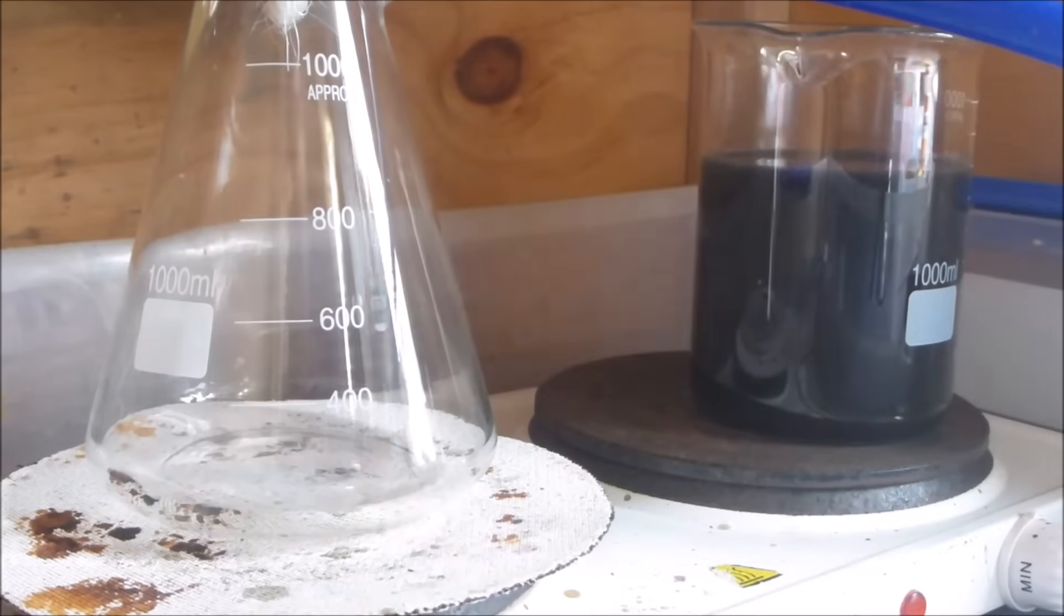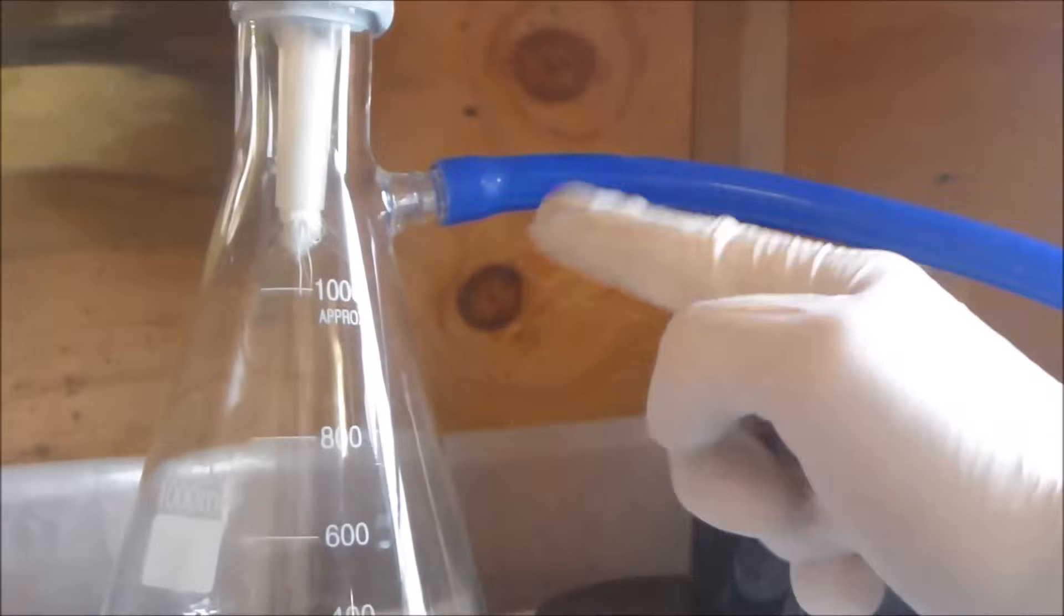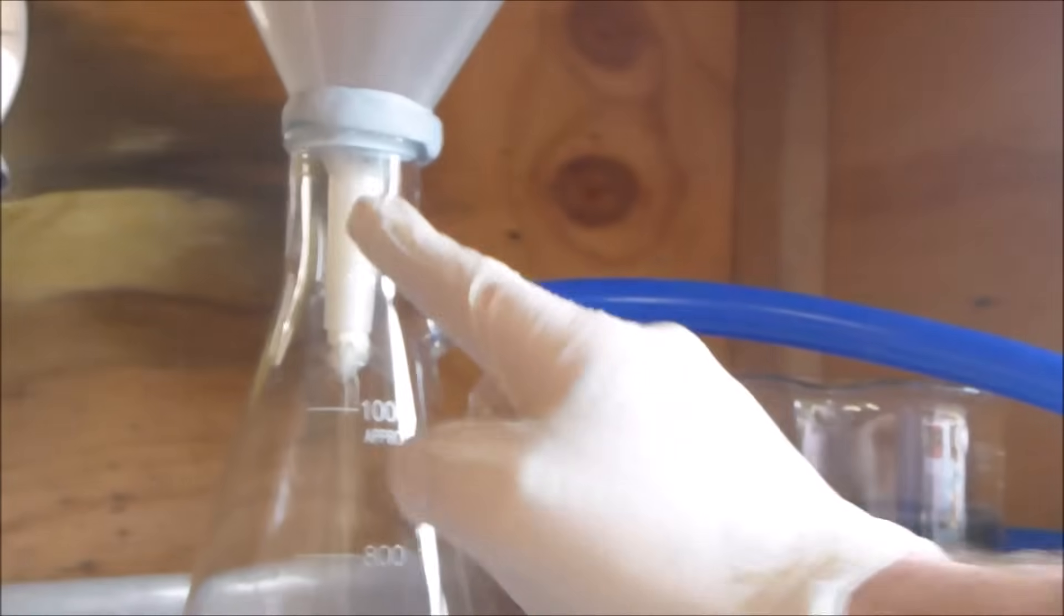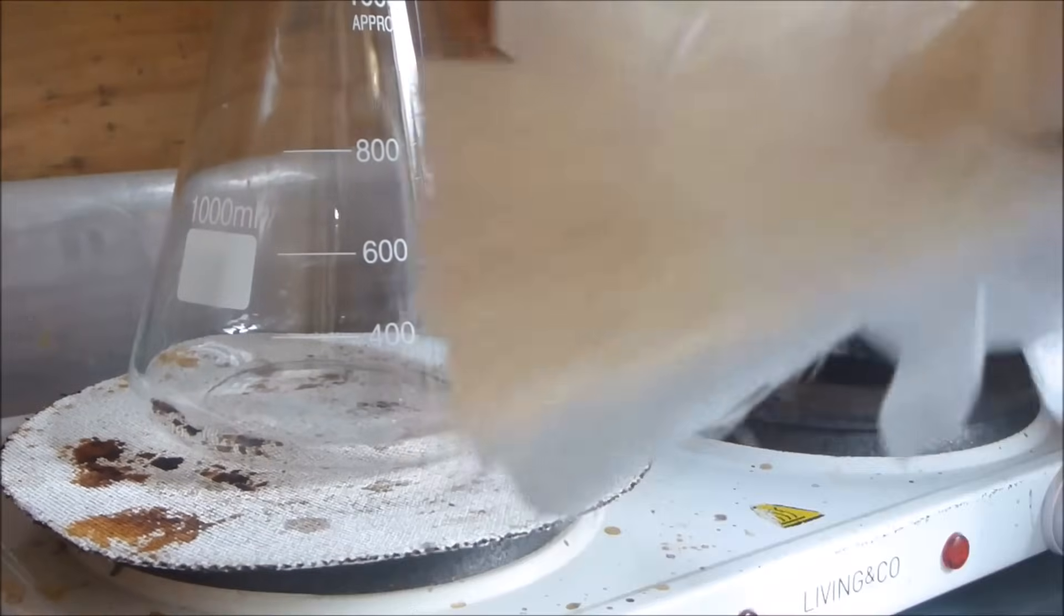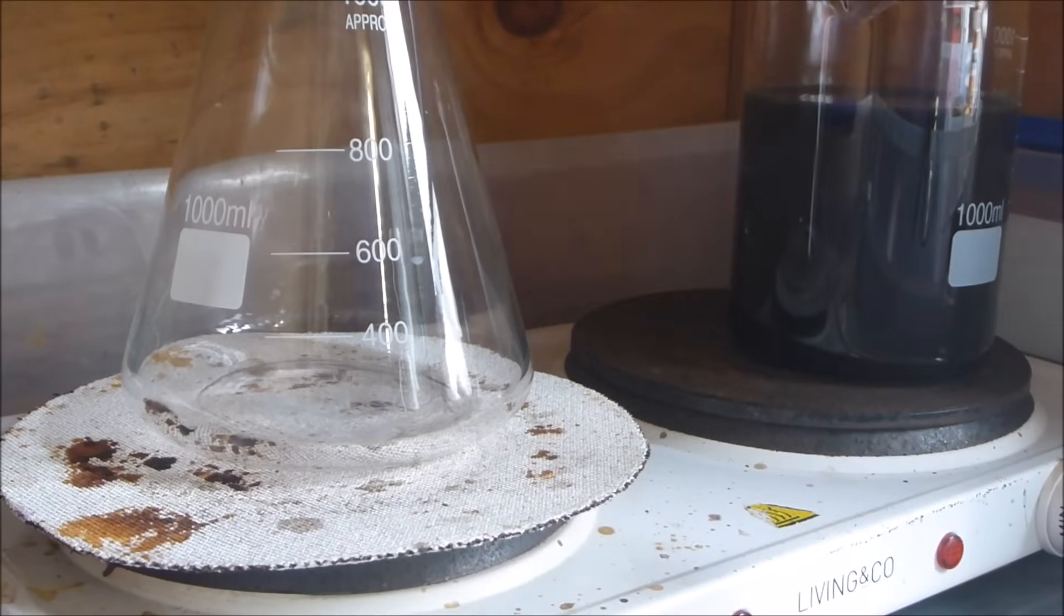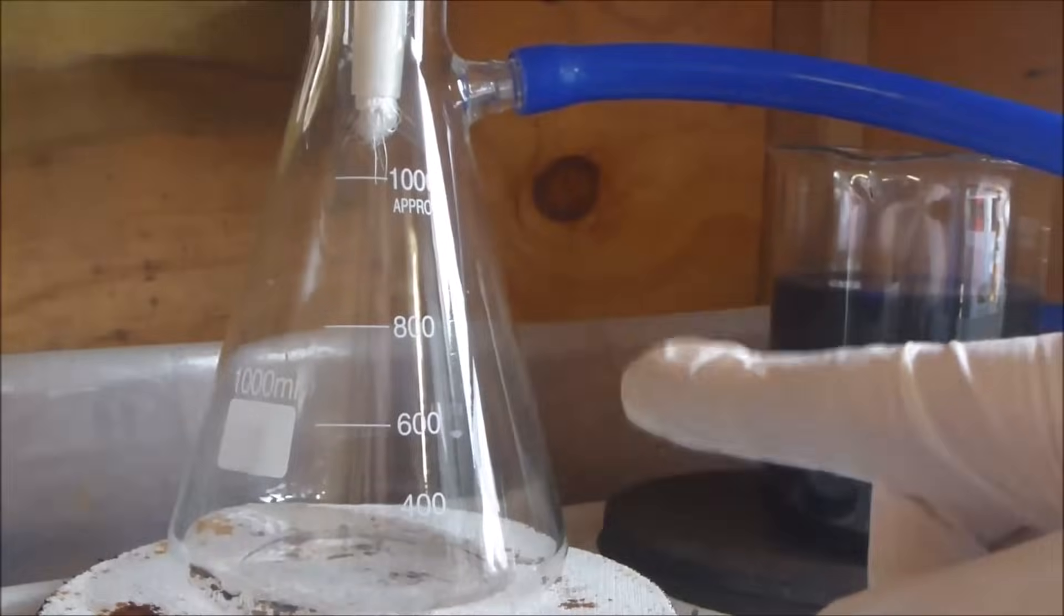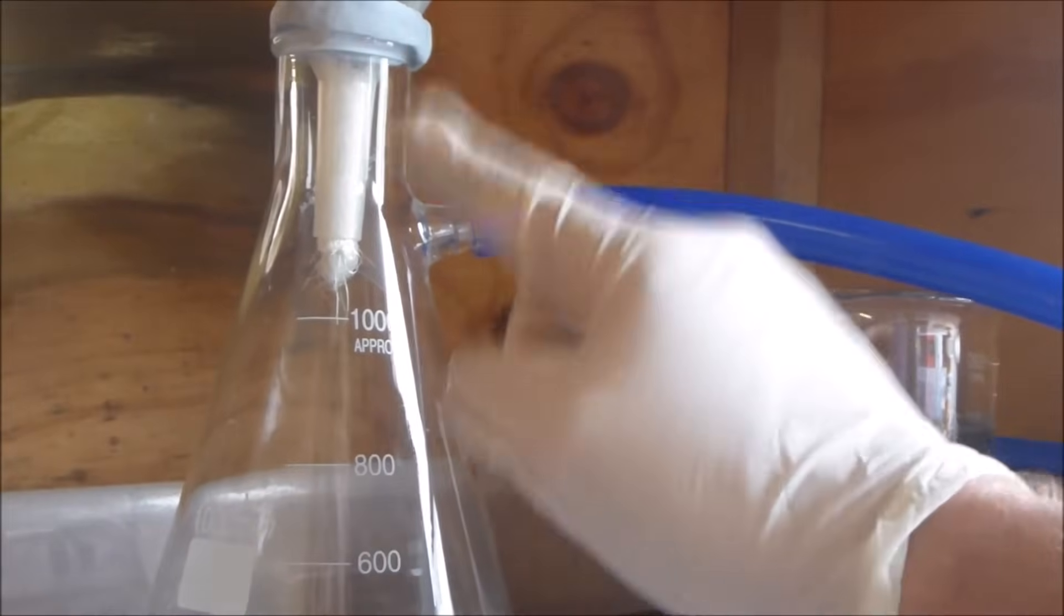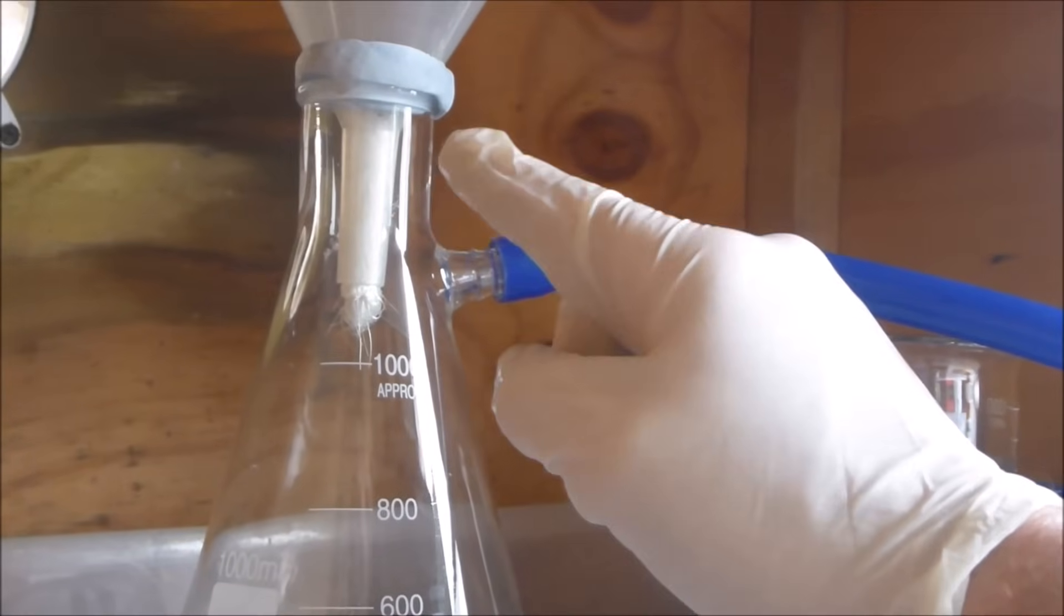Okay guys so I have the vacuum flask here with the vacuum tube connected, a funnel, and inside the funnel I've got a plug made out of fiberglass cloth that I had lying around. I've just stuck a whole bunch of that in there and so I'll start putting our solution through and I'm hoping that the plug is going to be good enough to trap the particles. I'm not super optimistic at this point but we'll find out.